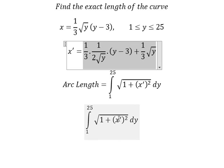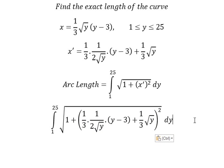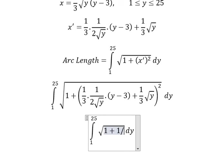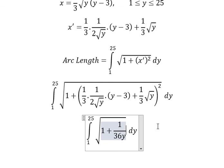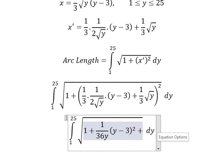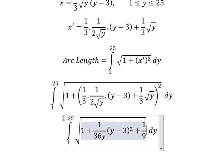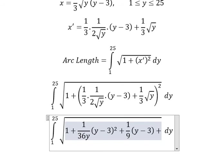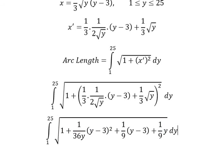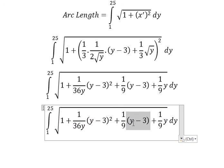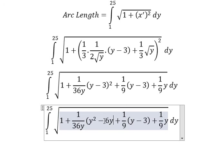So we put this expression in here. Now we need to expand this. So we will have 1 over 36y, and we have y minus 3 to the power of 2, plus 1 over 9, and we have y minus 3, and the last one is 1 over 9y. Now we need to expand these terms, so we have y squared minus 6y plus 9.